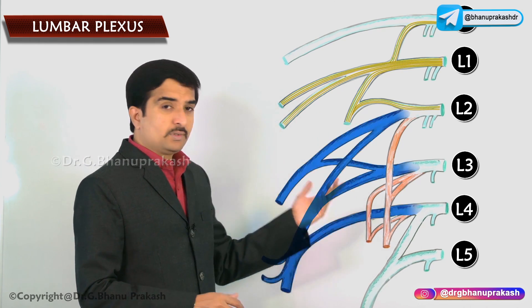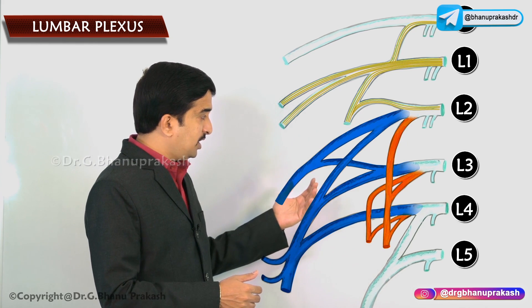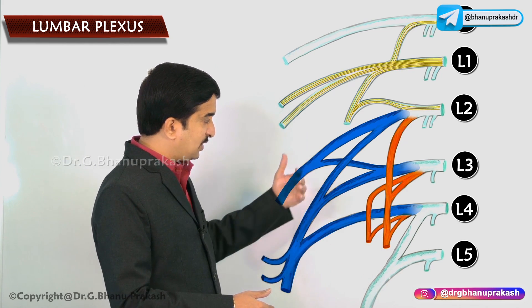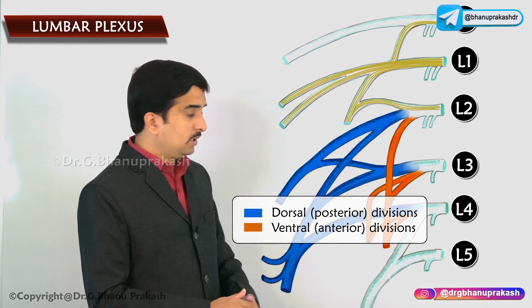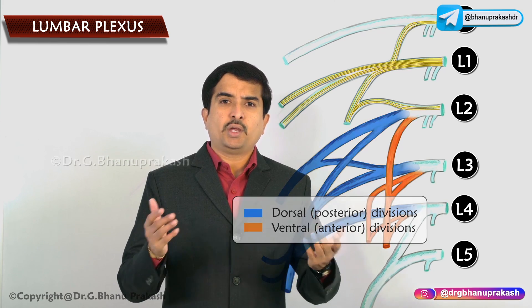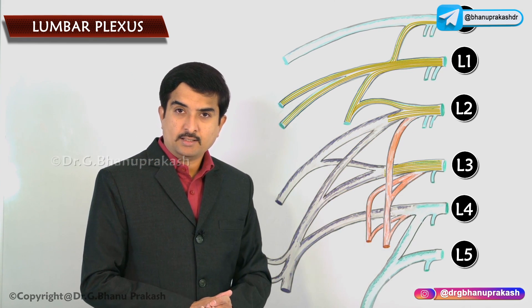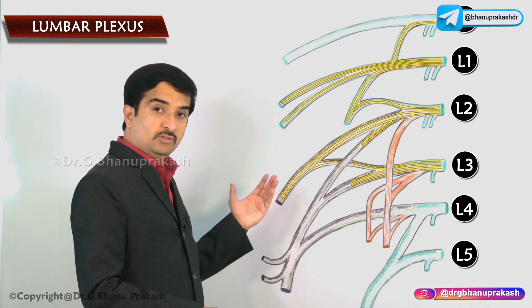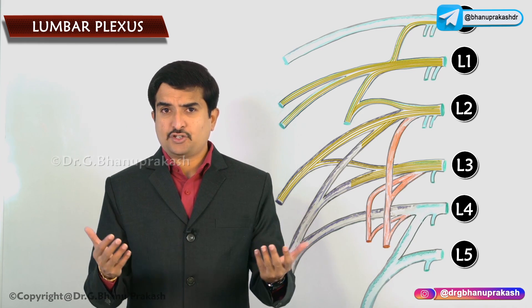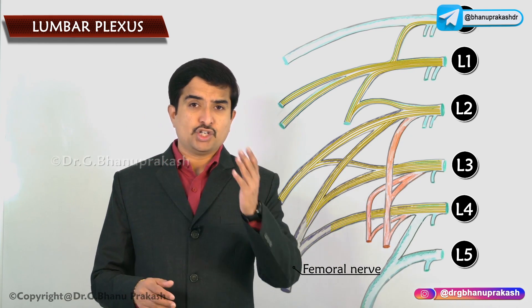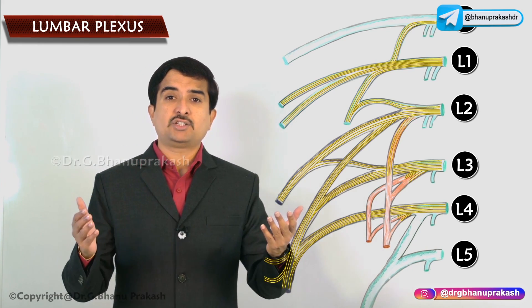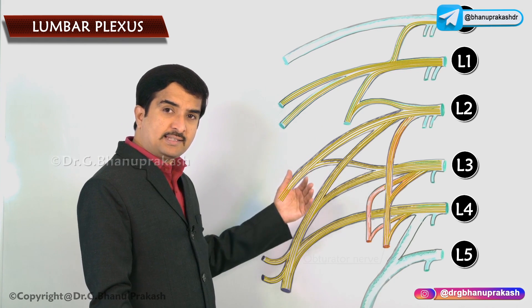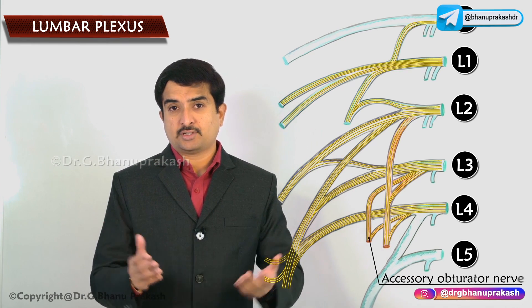The nerve roots L2, L3, and L4 divide into dorsal (posterior) and ventral (anterior) divisions — dorsal divisions depicted in blue, ventral in orange. The dorsal divisions of L2 and L3 unite to form the lateral cutaneous nerve, while the dorsal divisions of L2, L3, and L4 unite to form the femoral nerve. The ventral divisions of L2, L3, and L4 unite to form the obturator nerve, and sometimes ventral branches of L3 and L4 also form the accessory obturator nerve, though it is not present in all individuals.